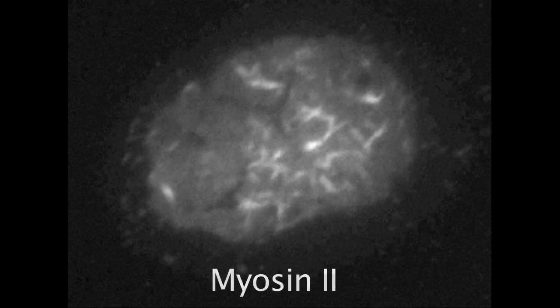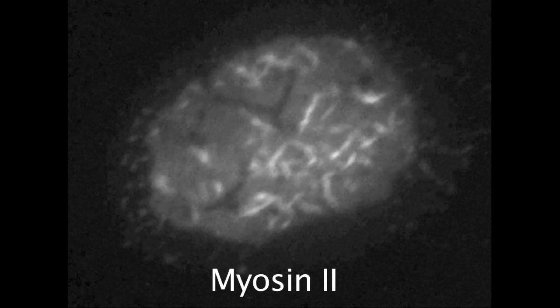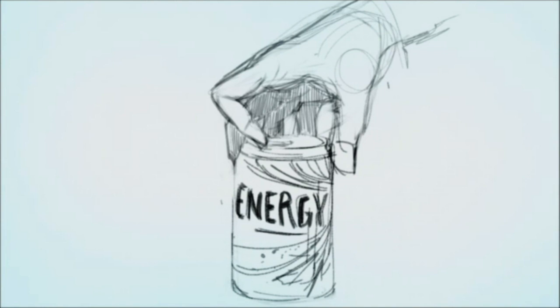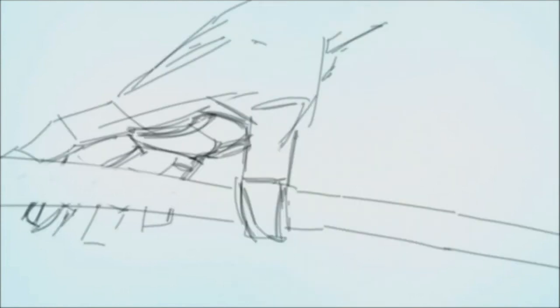Embedded within this meshwork of actin fibers are fibers made from the protein myosin-2. You can see them wiggling in the cell's skin. Myosin-2 uses energy to do mechanical work, just as a workman pauses for a drink so that he has the energy he needs to keep on working.